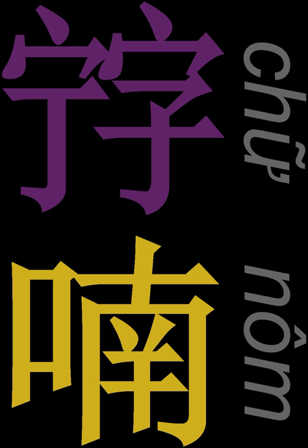There are many ways to write the name Chữ Nôm in Chữ Nôm characters. The word Chữ may be written as Xi, Xi Ning, Xi Shou, Xi Xi, Xi Wen, Xi or Ning, while Nôm may be written as Nan or Nan.